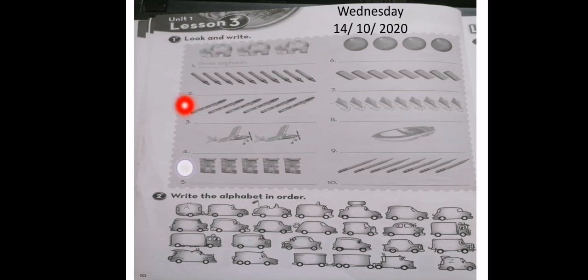Let's move to number two. How many crayons are there? Let's counting. One, two, three, four, five, six, seven, eight, nine, ten. Excellent. They are ten crayons. You should write ten crayons.